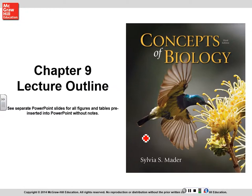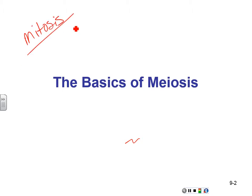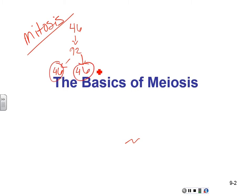Hi, welcome to Chapter 9. Let's look at the basics of meiosis. Let me just review for a second. Our last slideshow that we looked at was mitosis. That's where we have 46 chromosomes, we copy to 92, and then we split to 46 and 46. We have identical cells, and they're identical to the original cell.